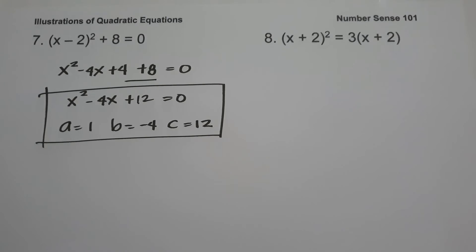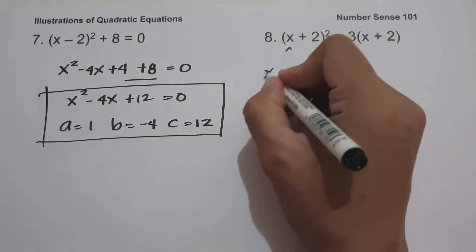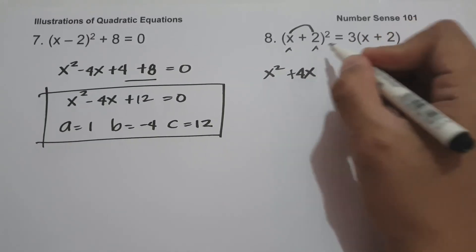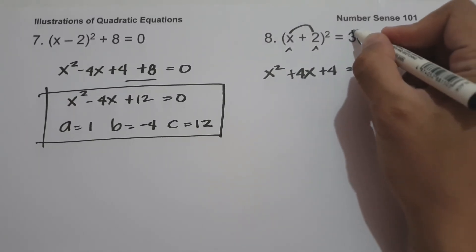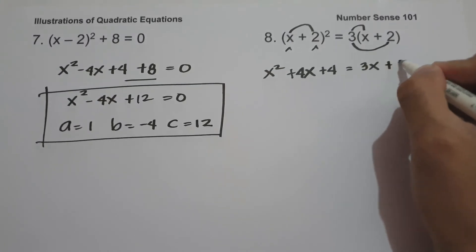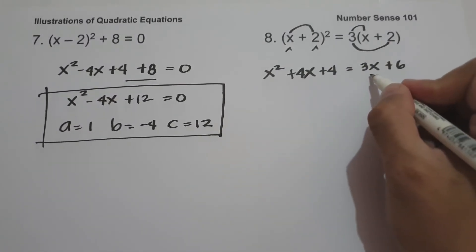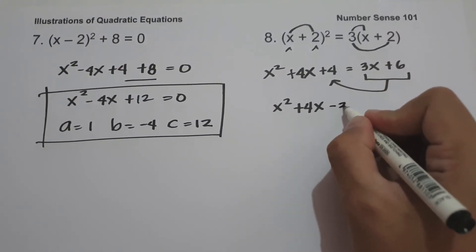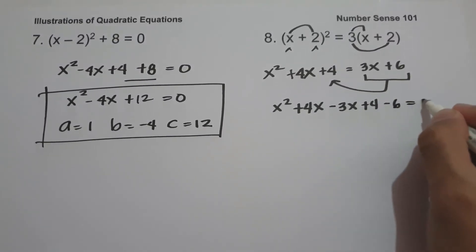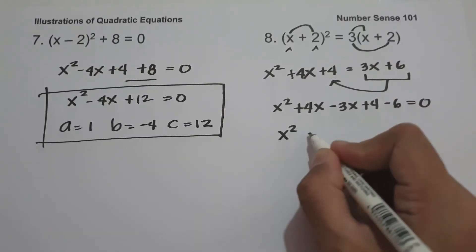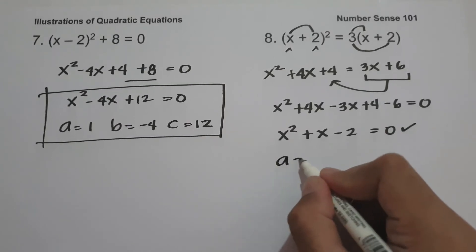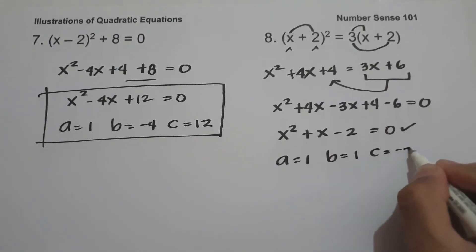On number eight, we have (x plus 2) squared equals 3(x plus 2). Expanding the left side: x squared plus 4x plus 4, and the right side: 3x plus 6. Moving 3x and 6 to the other side: x squared plus 4x minus 3x plus 4 minus 6 equals zero, which simplifies to x squared plus x minus 2 equals zero. So a is 1, b is 1, and c is negative 2.